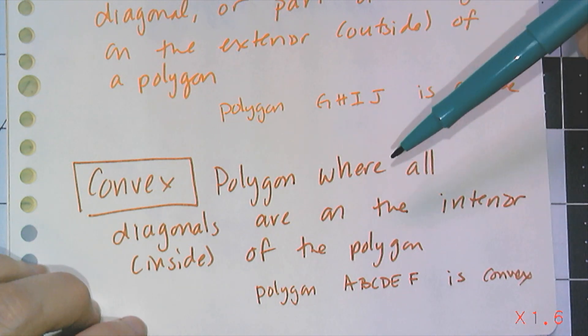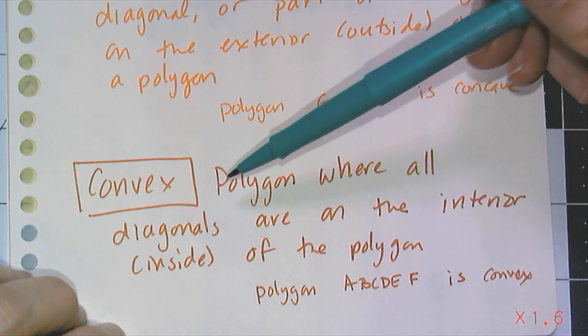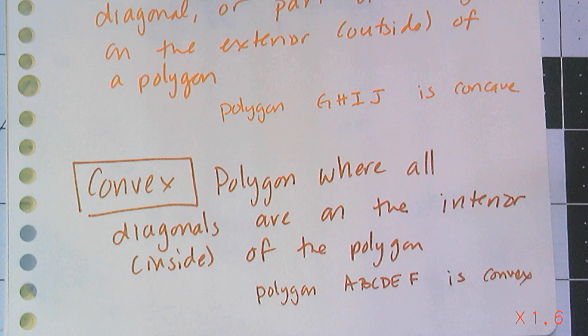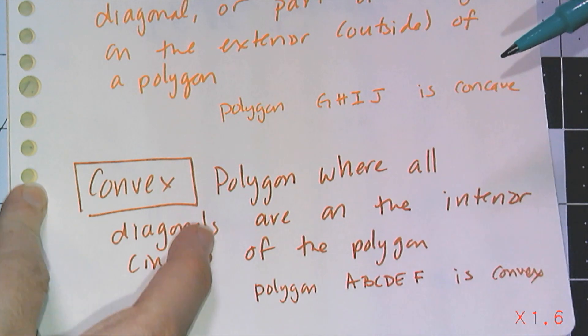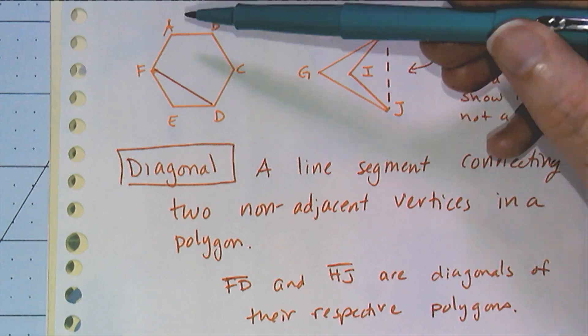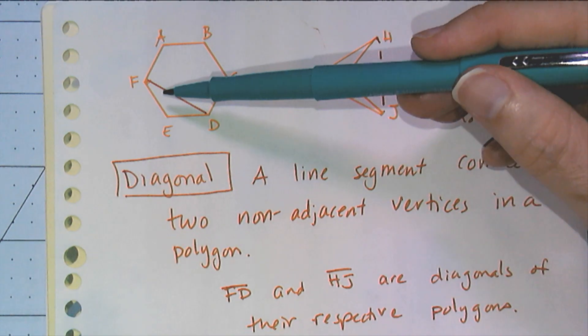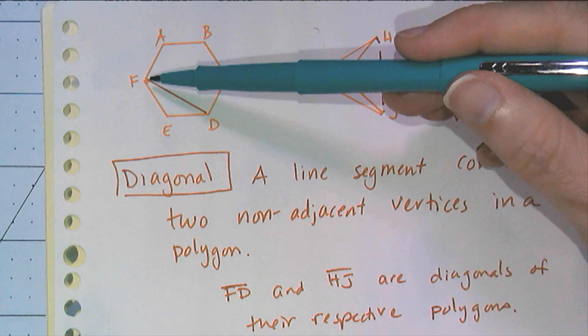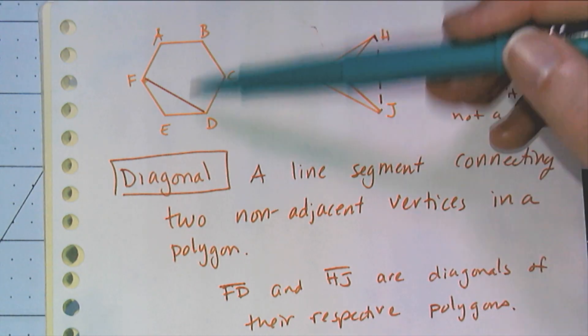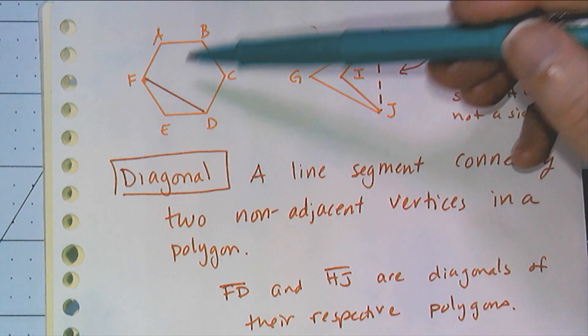To contrast a concave polygon, we have the convex polygon. These are polygons where all of the diagonals are entirely on the inside or interior of the polygon. So polygon ABCDEF is a convex polygon because no matter which diagonals I draw, they're all going to be on the inside.